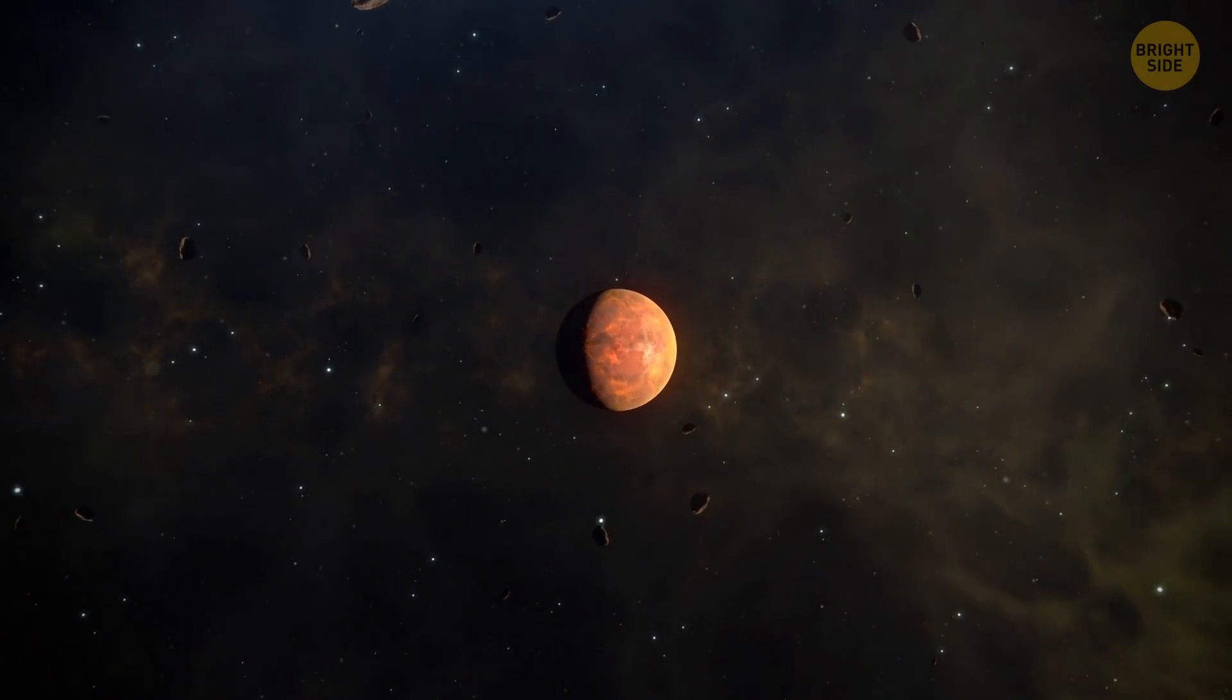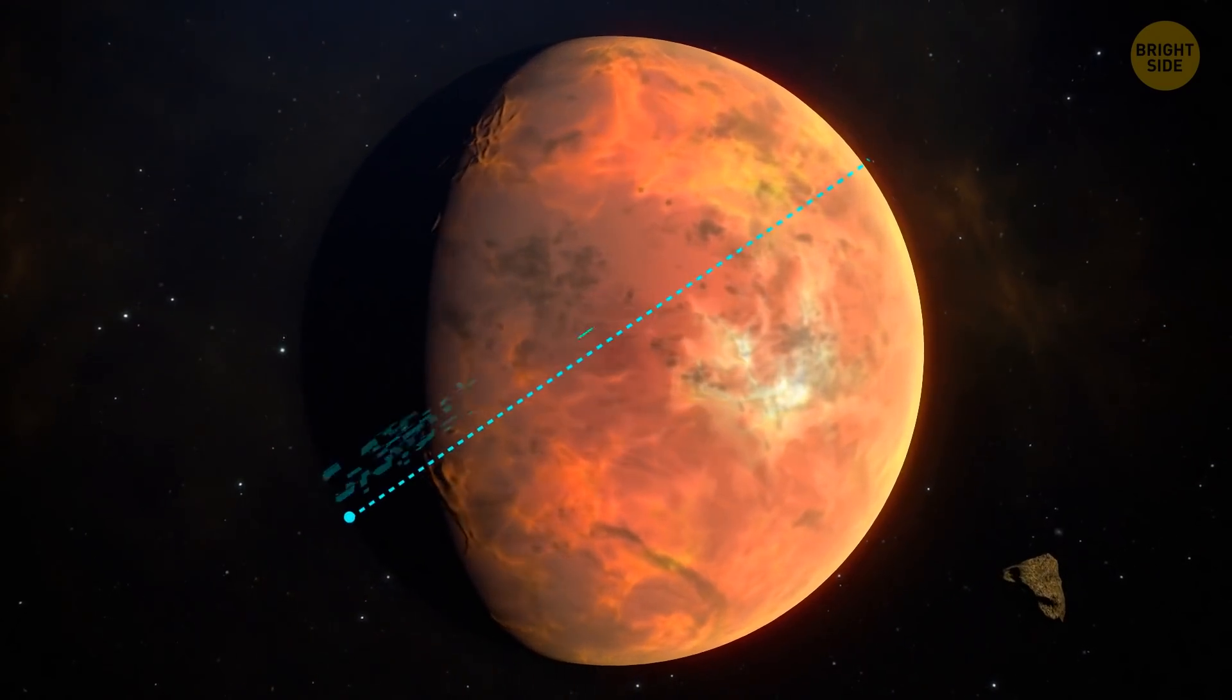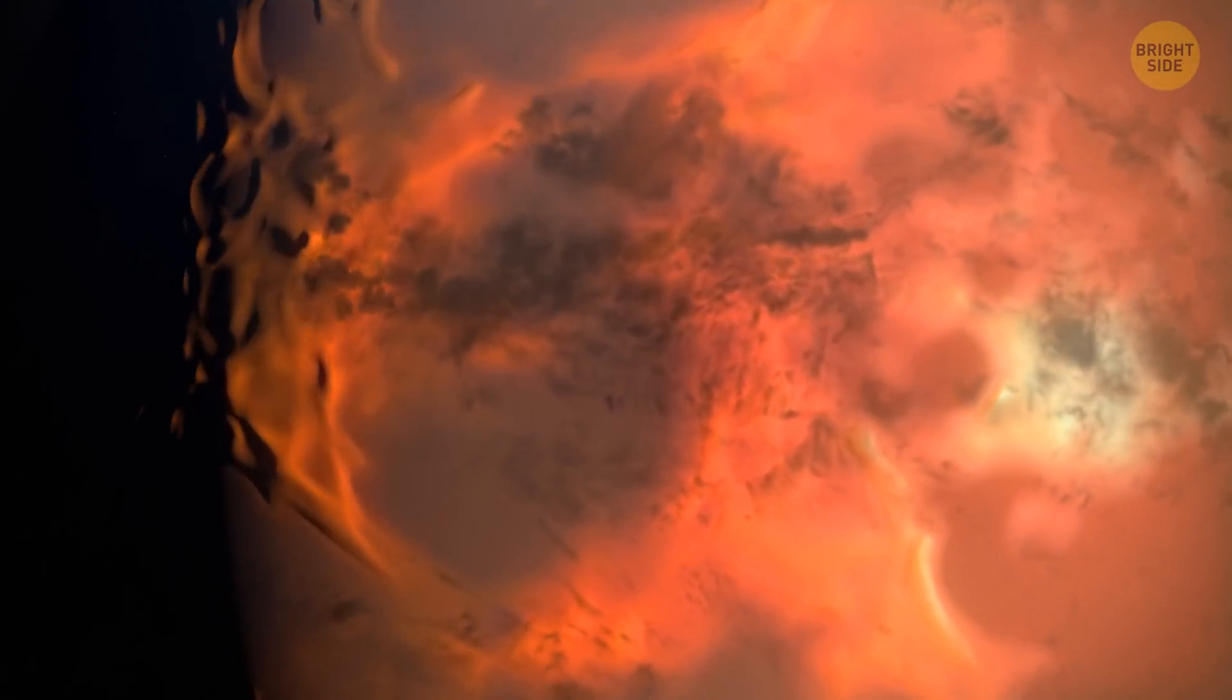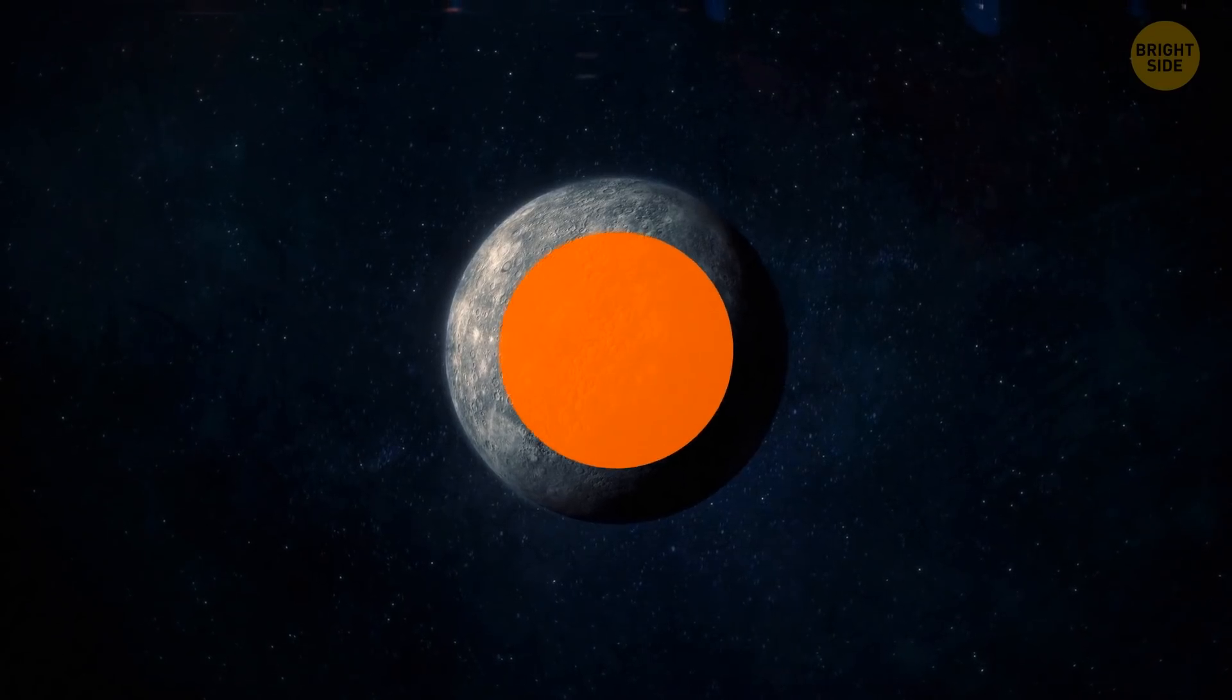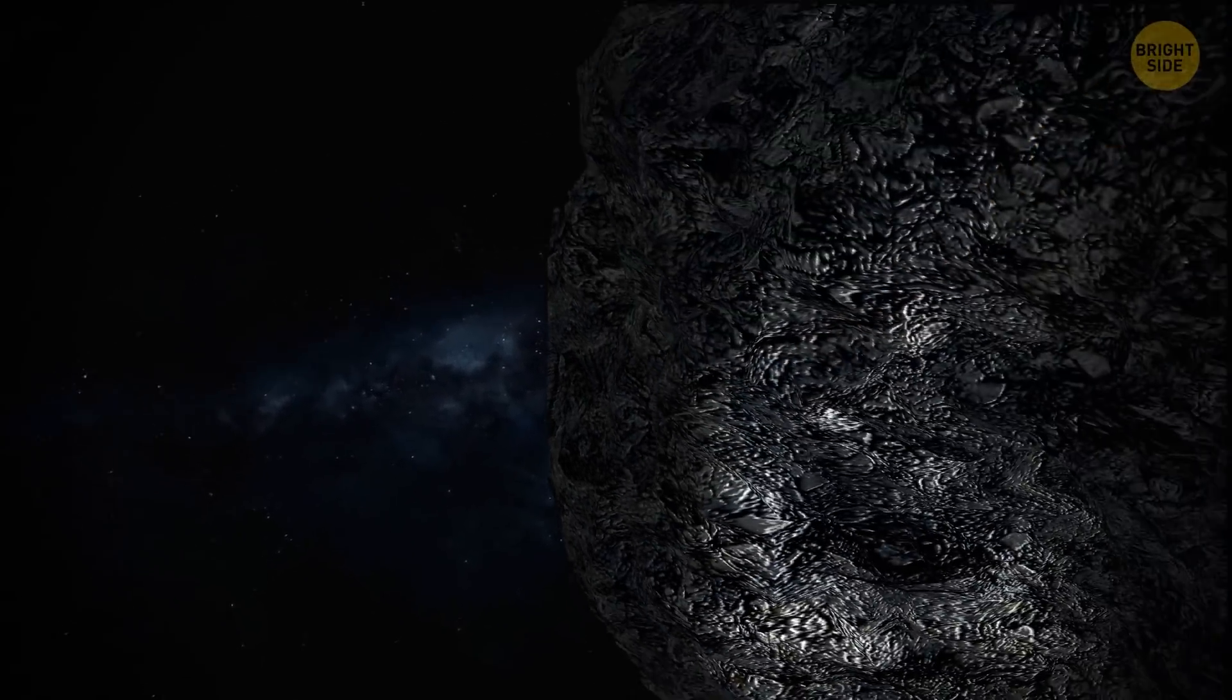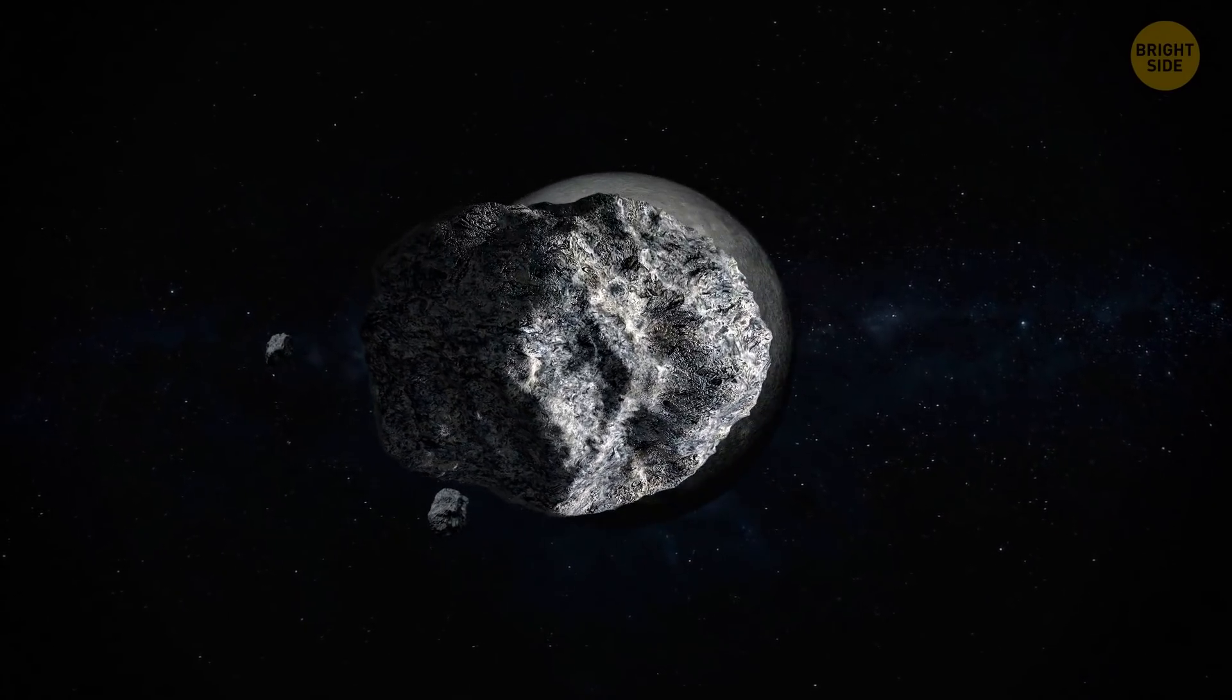There's another exoplanet half as massive as Earth, which is one of the smallest planets we've ever found outside our solar system. It has a diameter of 5,600 miles. For comparison, Earth's diameter is 7,900 miles. The planet in question is mostly made of iron, similar to Mercury. Mercury has a massive iron core and a very thin crust, which makes it an oddball in our solar system. At its early stages, it collided with some space body at least once. That collision pulled its outer layers away, which is why only the firm iron core remained.